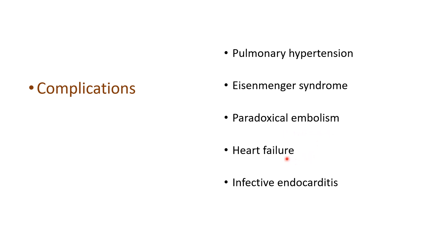Heart failure: the right heart is working two to three times more than the left heart, so there will be hypertrophy and eventual failure with features of right heart failure. Infective endocarditis: although ASD is relatively immune to infective endocarditis, it may still develop.